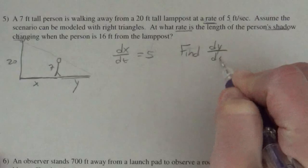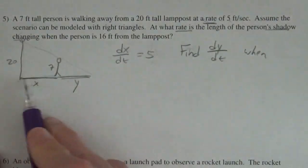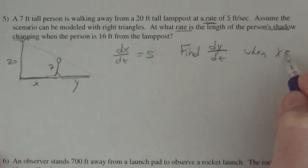And they want to find the rate at which the shadow is changing, so they want to find dy/dt at the point when he's sixteen feet away from this. So when x is sixteen.